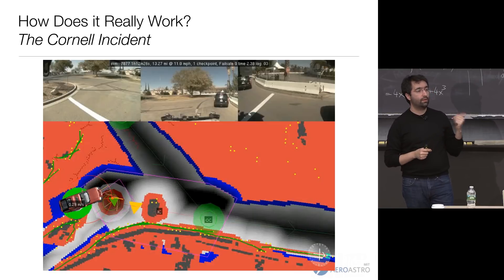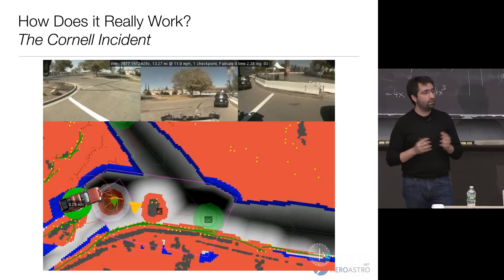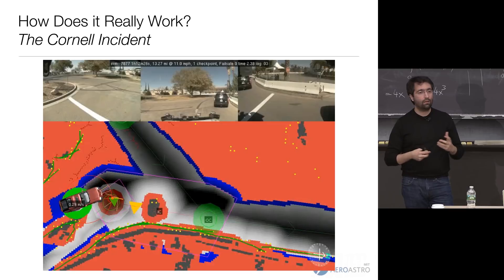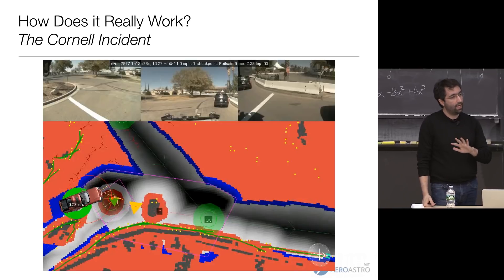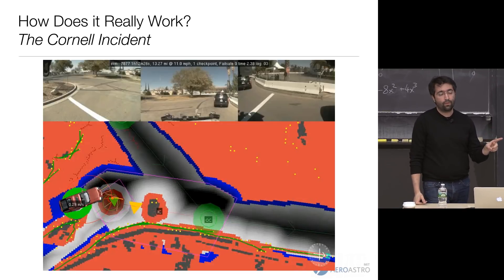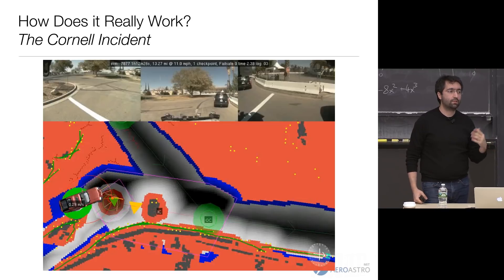We didn't have too much on the testing front — the only reason was we just didn't have time. We started maybe a year before putting together infrastructure like the message-passing system. But to test in reality — the race was in November, we probably got the vehicle clean around April. So really it was just the summertime that we had to test, and admittedly we couldn't test much. Draper Laboratory helped out a lot with testing; without that, we probably wouldn't have tested at all.